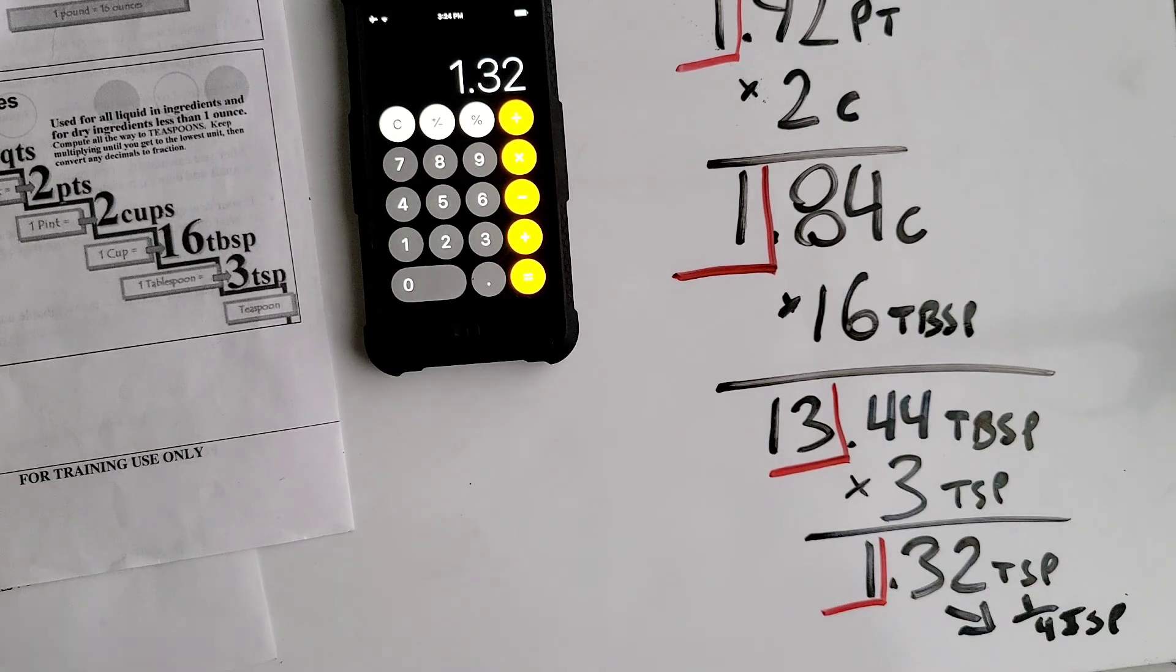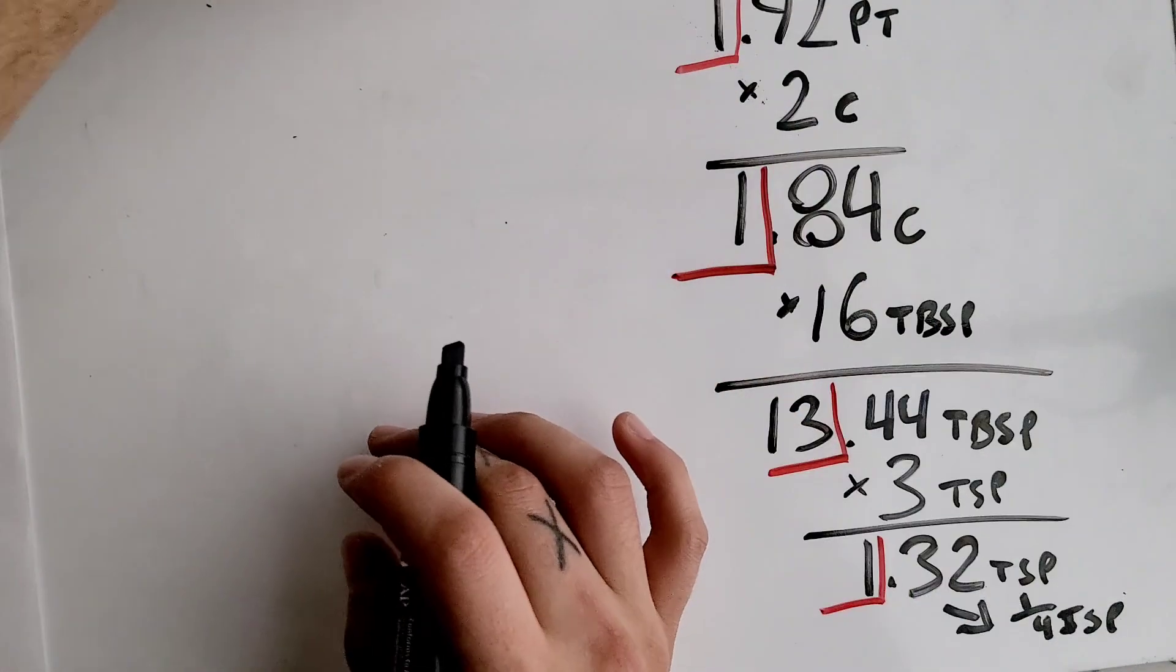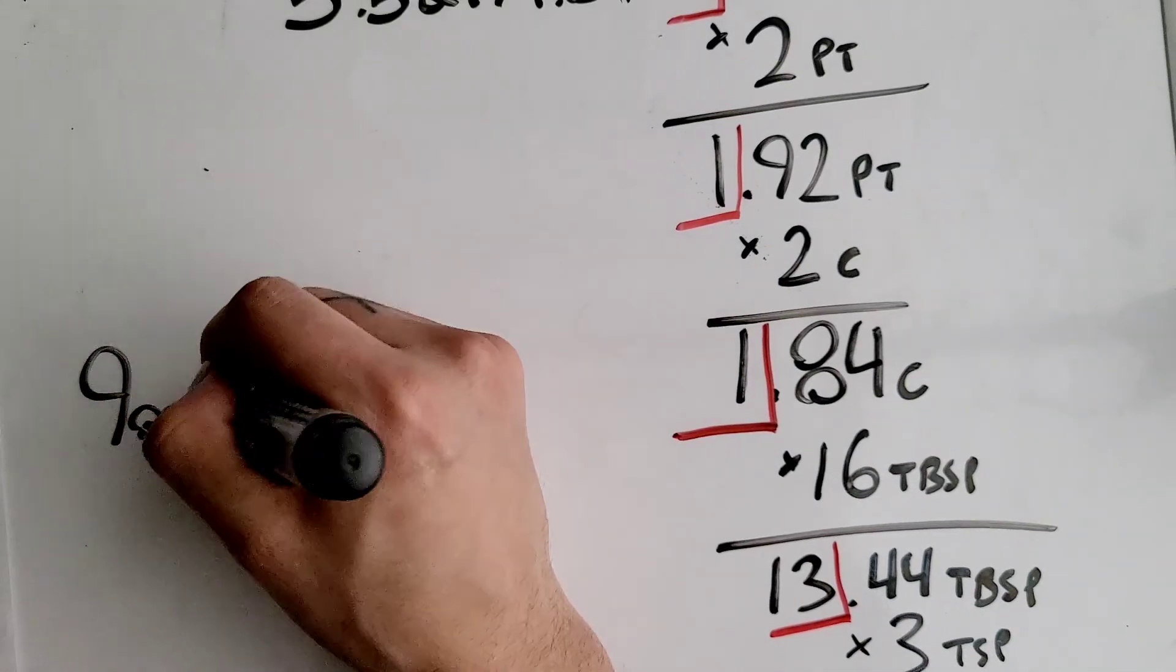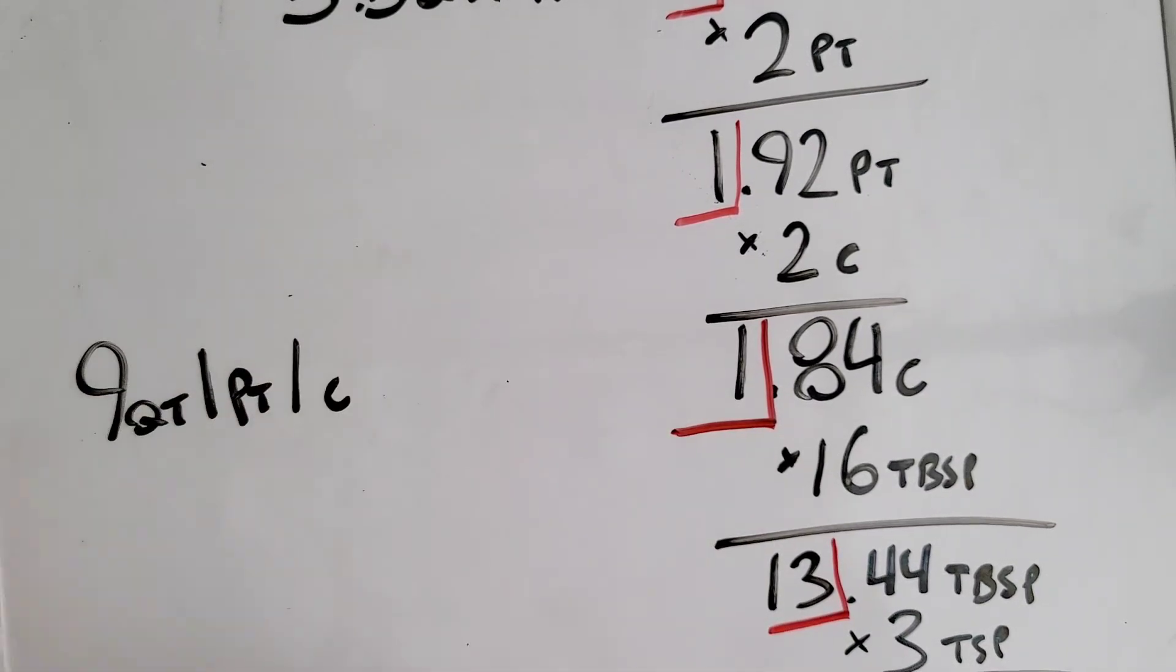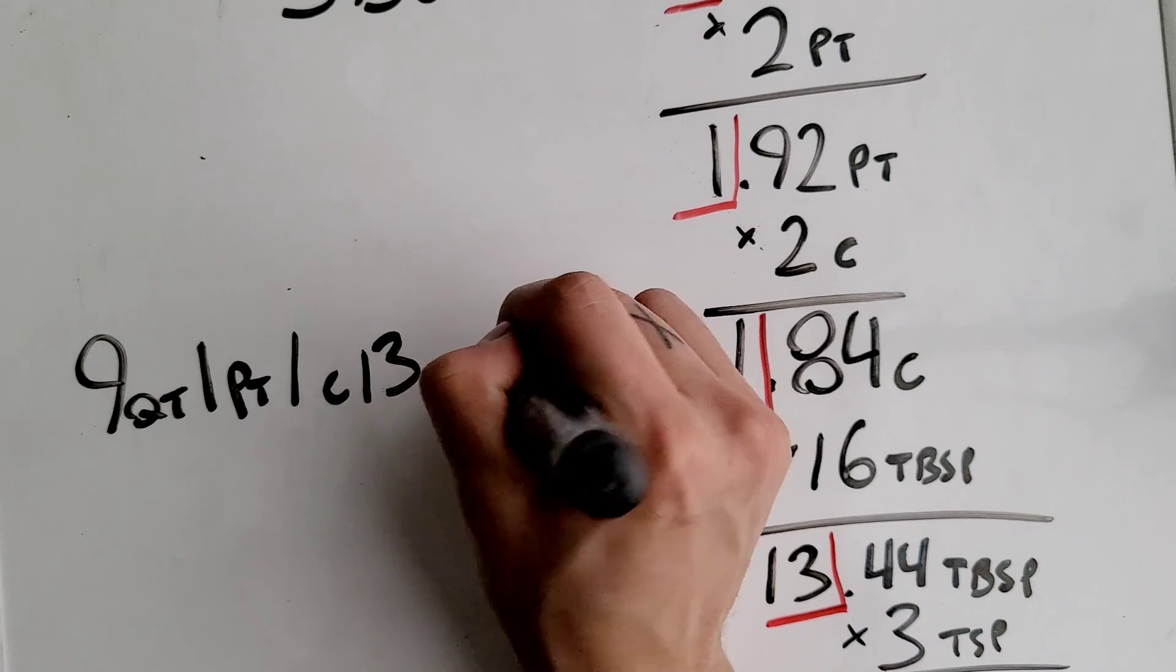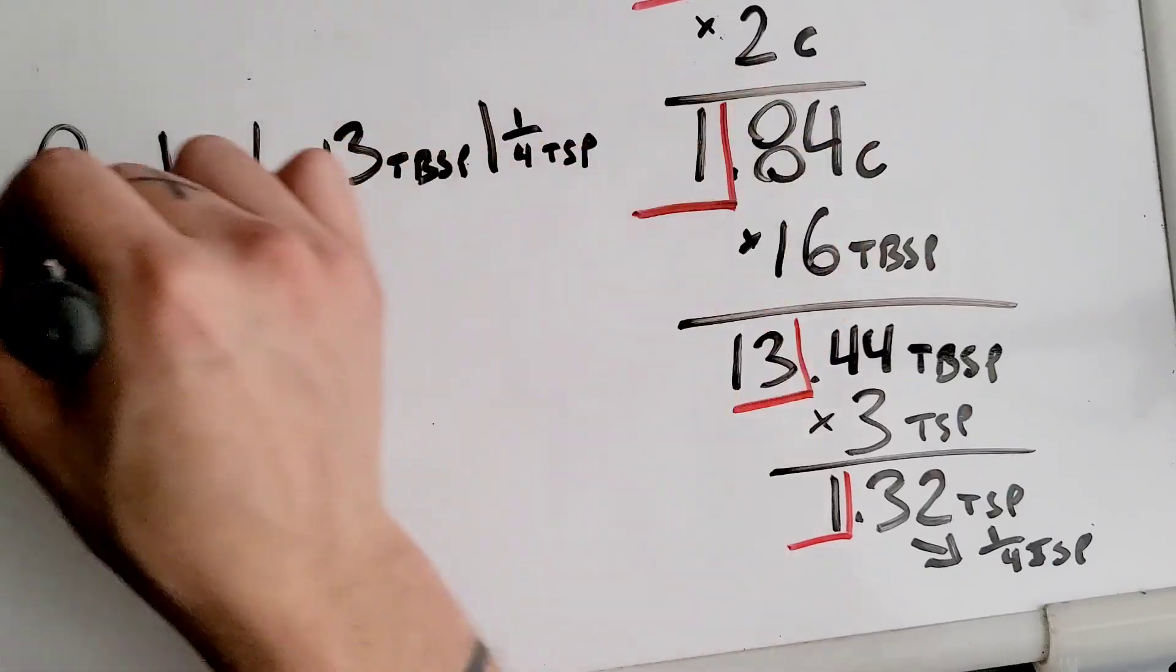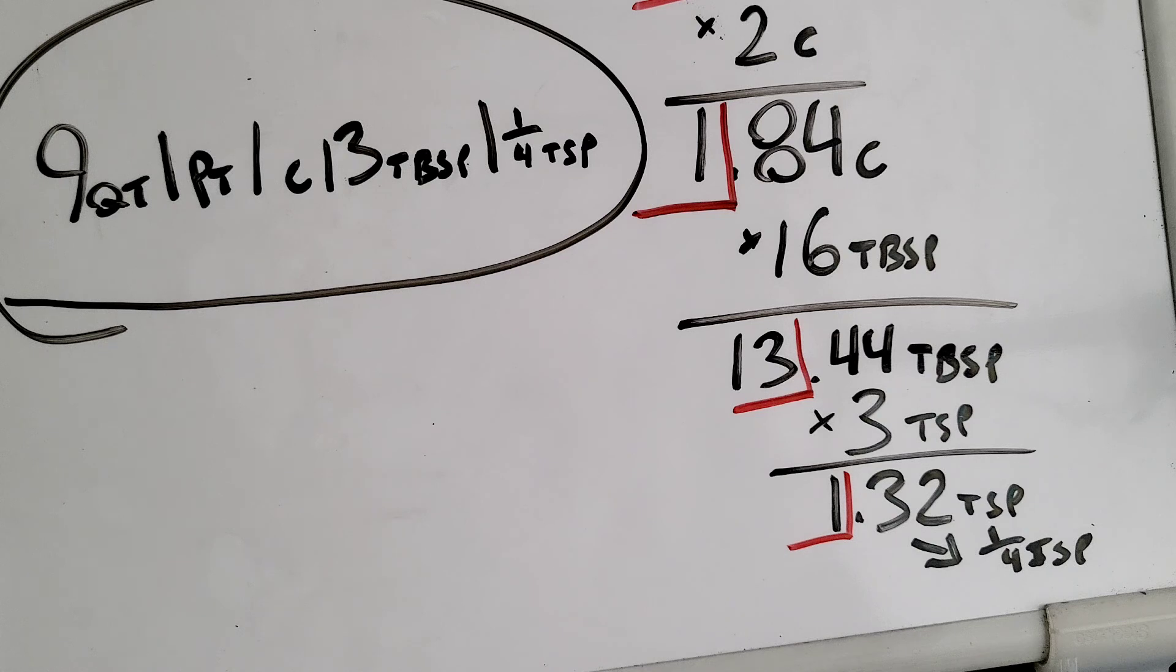Our final answer to this problem is 9 quarts, 1 pint, 1 cup, 13 tablespoons, and 1 and one-fourth teaspoons. So that is your final answer for this mixed unit word problem.